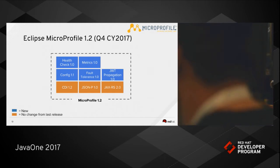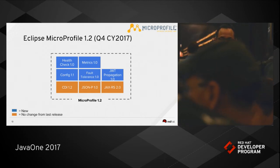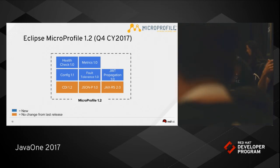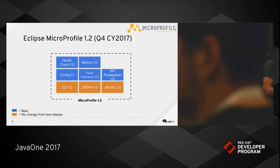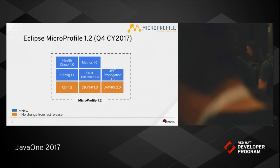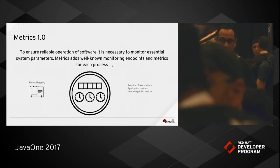JWT Propagation is related to security. We're using JSON Web Token for this, which is an adequate standard for microservices security for authentication and authorization. This API provides functionality that supports that. So let me go back to the individual slides on each of those.